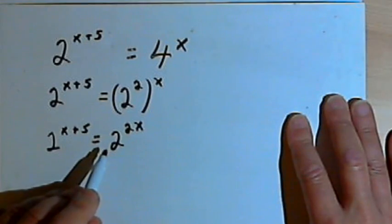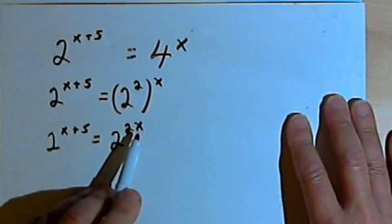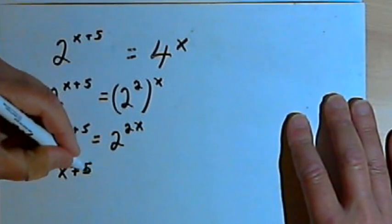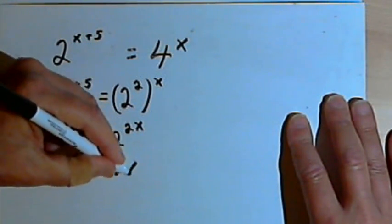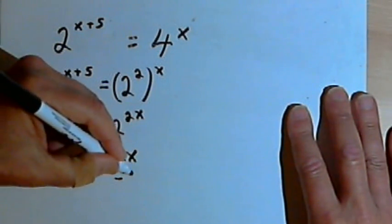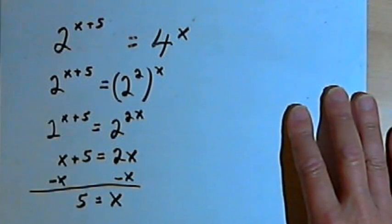So now I've got 2 to the x plus 5 equals 2 to the 2x. Since the bases are the same, the exponents must be equal to each other. So I can just say x plus 5 equals 2x, and then when I subtract x from both sides of the equation, I'm going to end up with x equals 5.